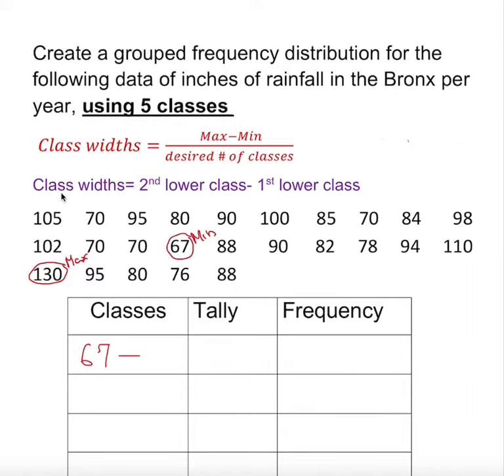We have a maximum number, a minimum, just plug it in, and desired number is five classes. If we plug it in, it's going to give us 130 minus 67 over 5, which is 12.6. Be very careful. If you come along with a decimal number, make sure you round to the next whole number.